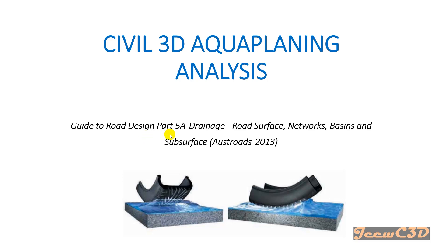This analysis is based on the Guide to Road Design Part 5A: Road Surface, Network Basins and Subsurface Post Road 2003 guideline. Aqua planning means when a vehicle is traveling on the road in a rainy season, there may be a film of water on the road surface which separates the tire and road surface. If the water film thickness is too much and the speed of the vehicle is high, the driver may lose control of the vehicle due to this water film thickness.